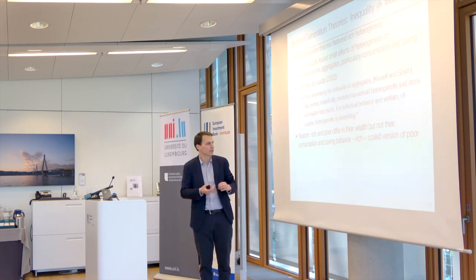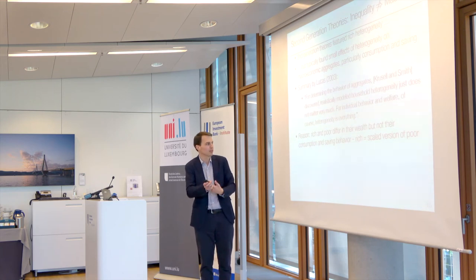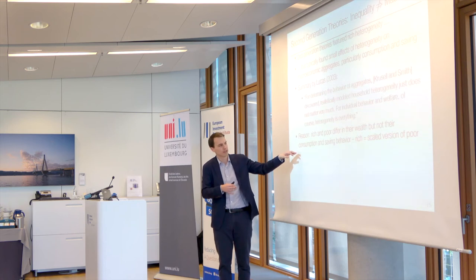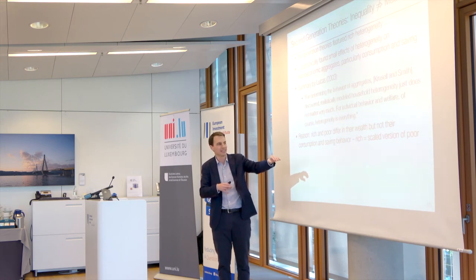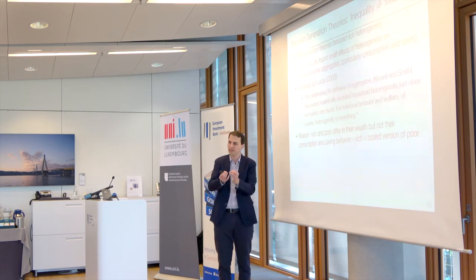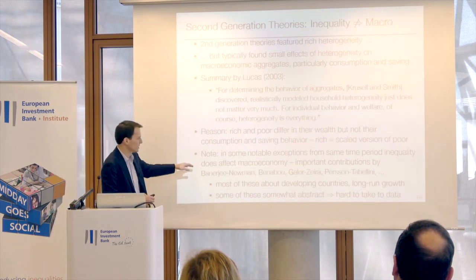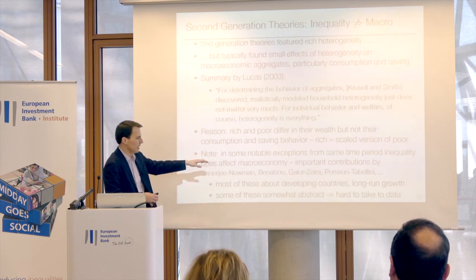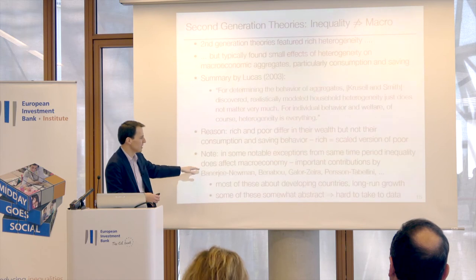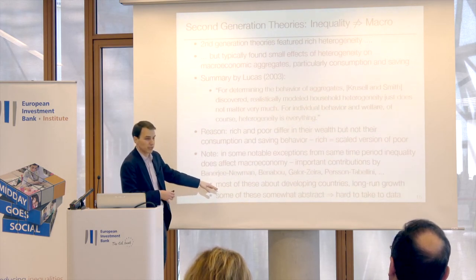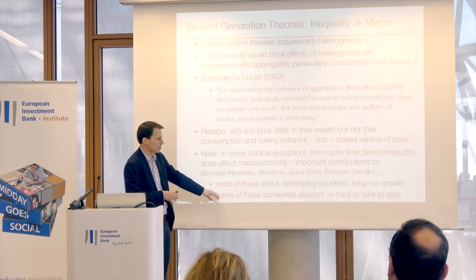The reason for this is a bit technical but I'll try to make it intuitive. In the second generation theories, rich and poor people differ in income and wealth, but they don't really differ in their consumption and savings behavior. In particular, the rich in these theories tend to be just scaled versions of poor people — they have the same savings and consumption rates, just at a higher level. There are some notable exceptions, mostly about long-term growth in developing countries, but I won't dwell on those.